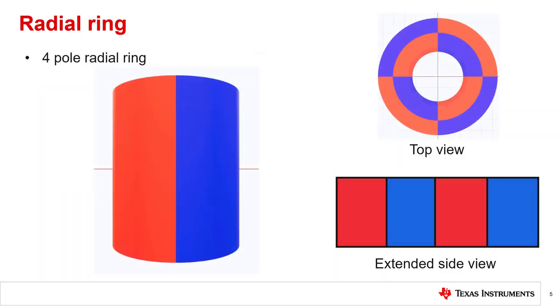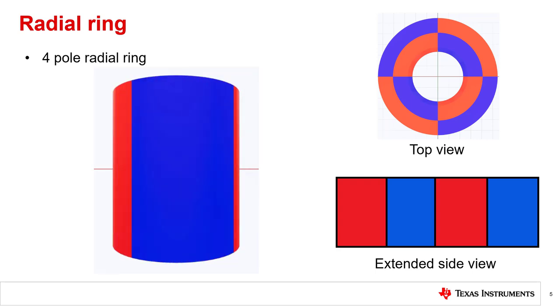Taking a four pole radial ring for example, when viewed from the outer round portion of the magnet we can see that there are four poles, but when observing from the top where the flat circular faces are located, the number of poles viewable is doubled. In this case of the four pole radial ring, eight poles would be viewable from the top.